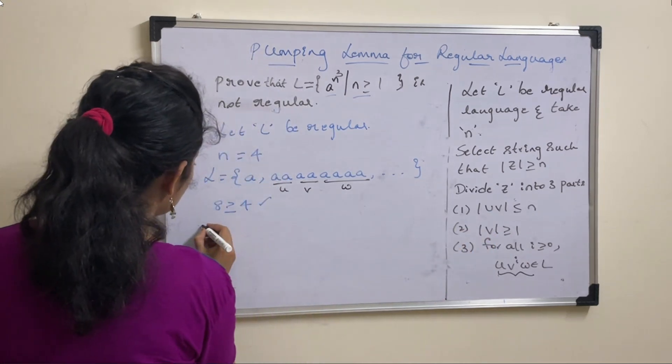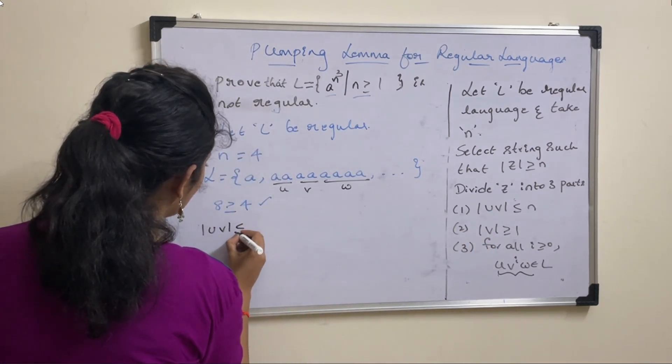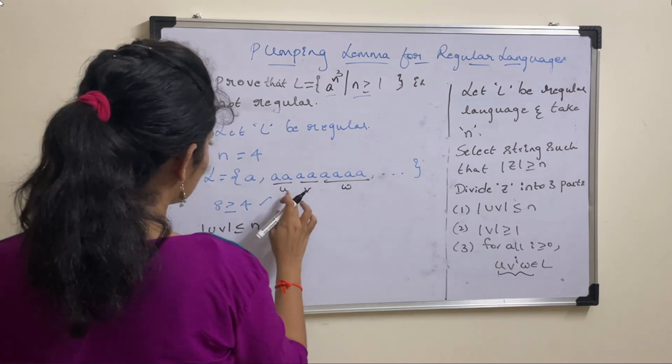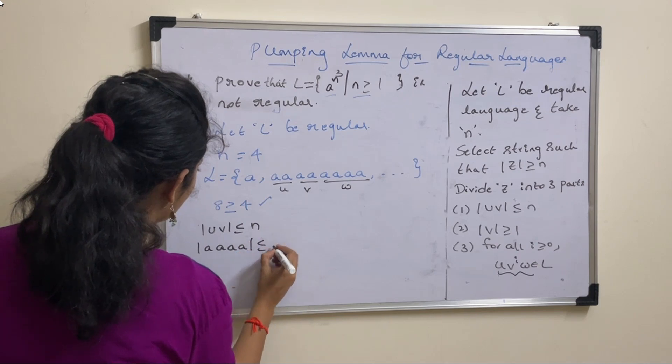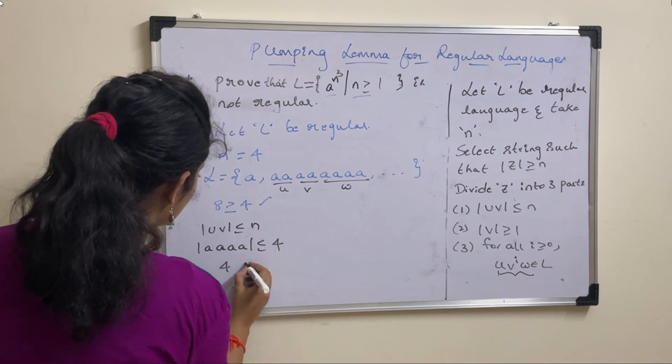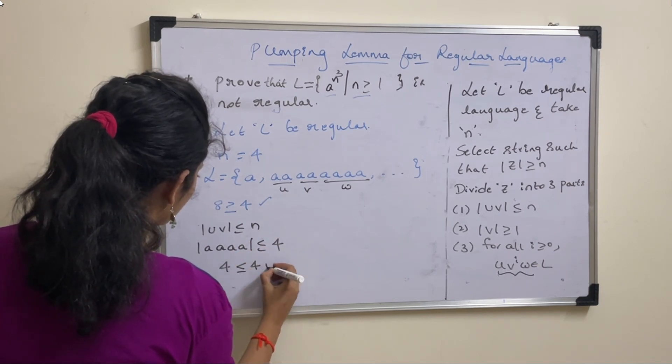Now first condition is mod u v less than or equal to n. So what is mod u v? This is a a a a less than or equal to n value 4. String length 4 less than or equal to 4, true.